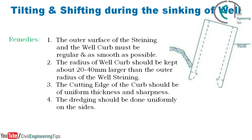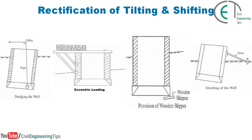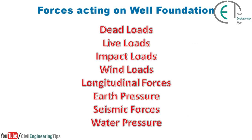Now let's discuss about the remedies of tilting and shifting. The outer surface of the steining and the well curb must be regular and as smooth as possible. The radius of the well curb should be kept about 20 to 40 millimeters larger than the outer radius of the well steining. The cutting edge of the curb should be of uniform thickness and sharpness. The dressing should be done uniformly on the sides. Examples of rectification include: kentledge loading, eccentric loading, provision of wooden slivers at the bottom of the well, and strutting of the well.